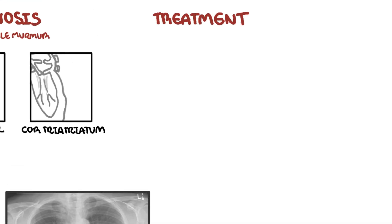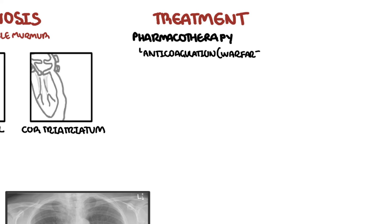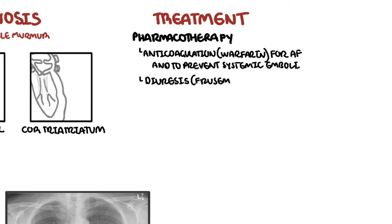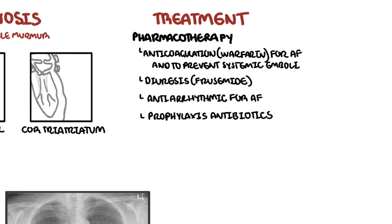Treatment of mitral stenosis includes pharmacotherapy with four main medications: anticoagulants, including warfarin — the anticoagulant of choice — specifically to manage atrial fibrillation and reduce the risk of systemic embolization; diuretics such as furosemide to manage fluid overload; antiarrhythmic agents in the setting of atrial fibrillation; and prophylactic antibiotics to reduce the risk of infective endocarditis or joint infections in those with a background of rheumatic fever.